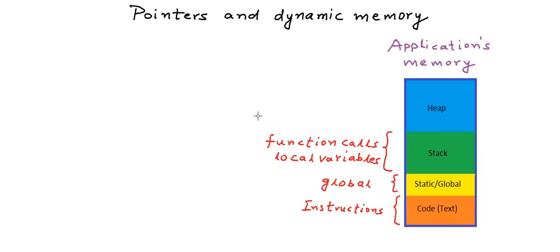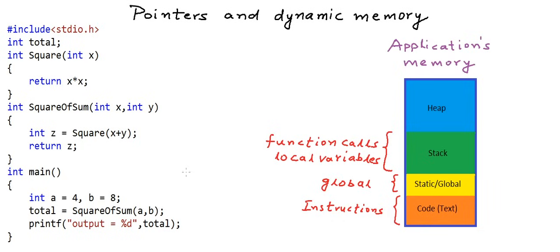Let us first understand how these three segments of the memory are used when a program executes. I have a simple C program here. We have a function square that gives the square of a number. We have another function square of sum that is given two arguments x and y, and it returns the square of x plus y. And in the main method I am just calling this function square of sum, passing it two arguments a and b.